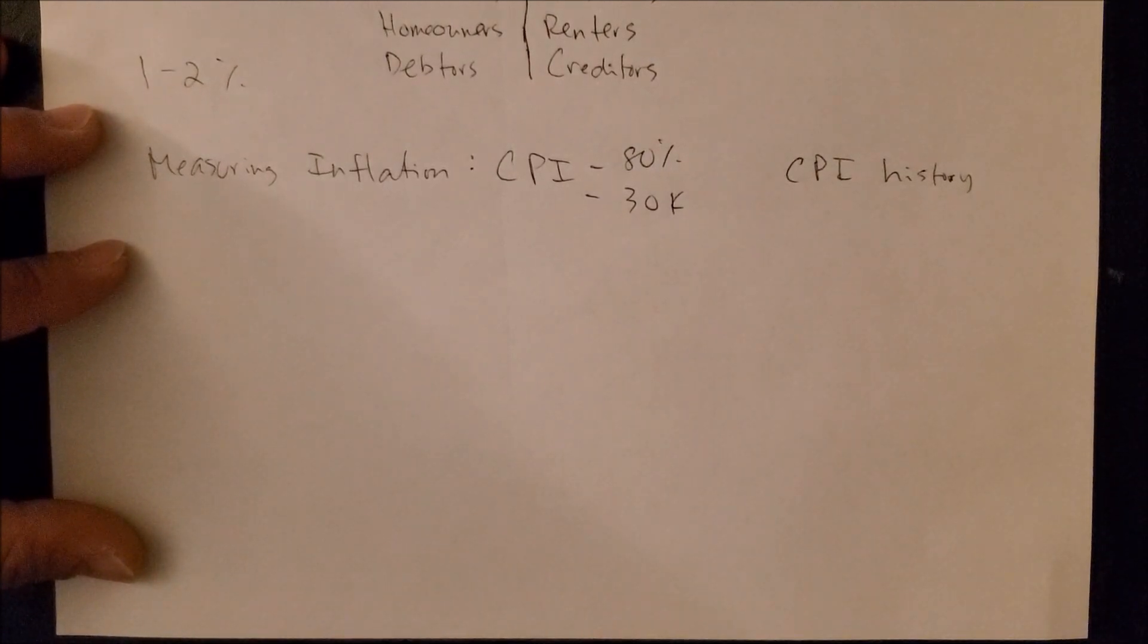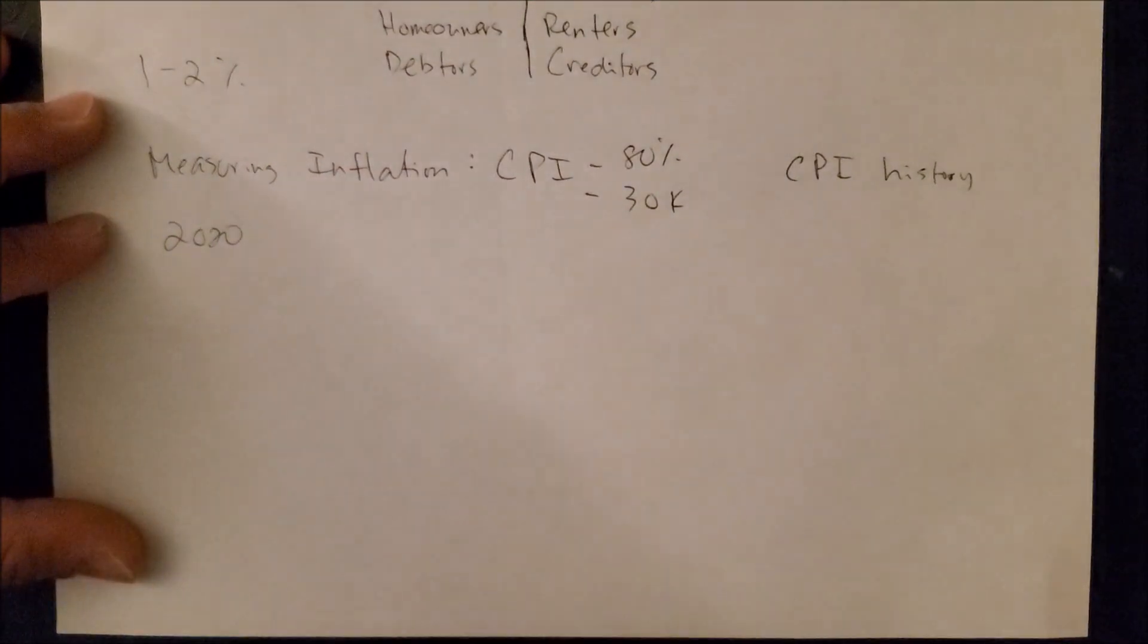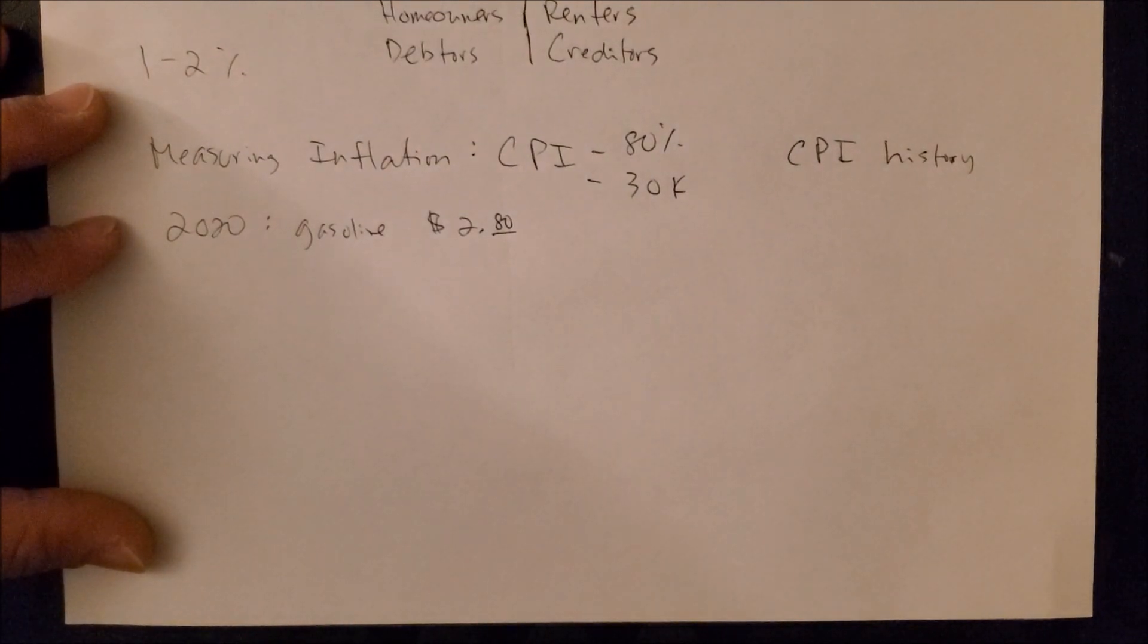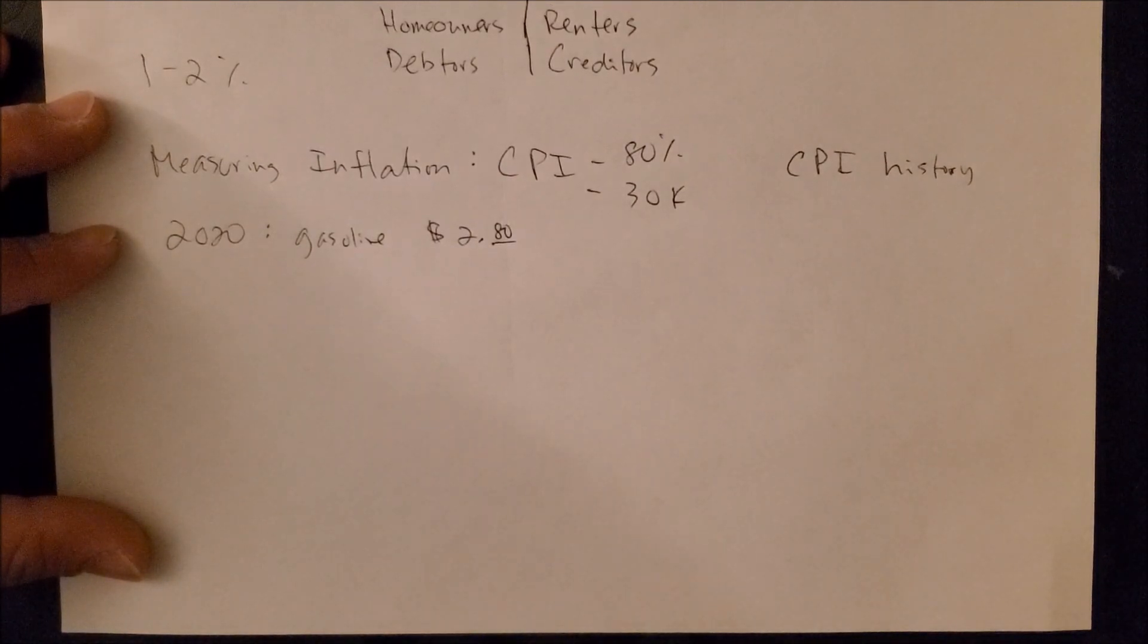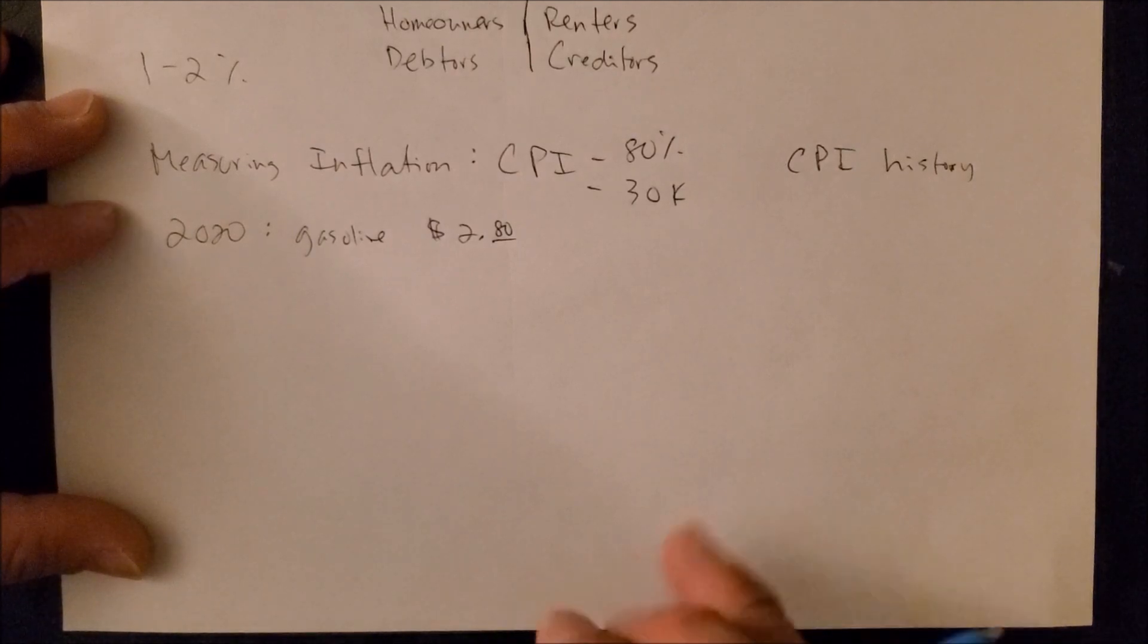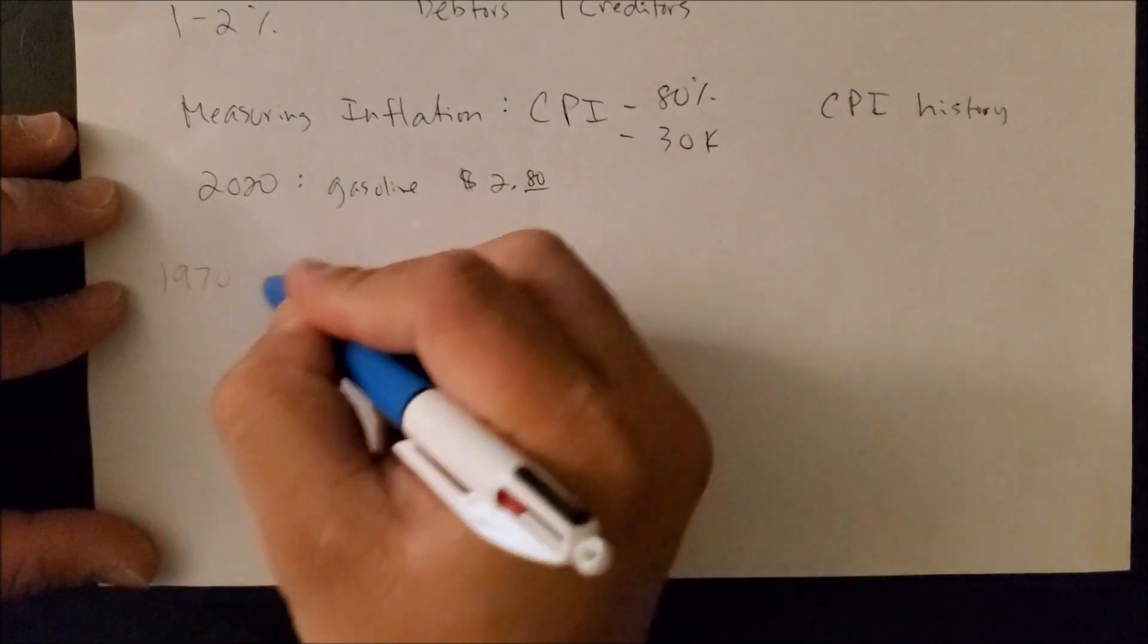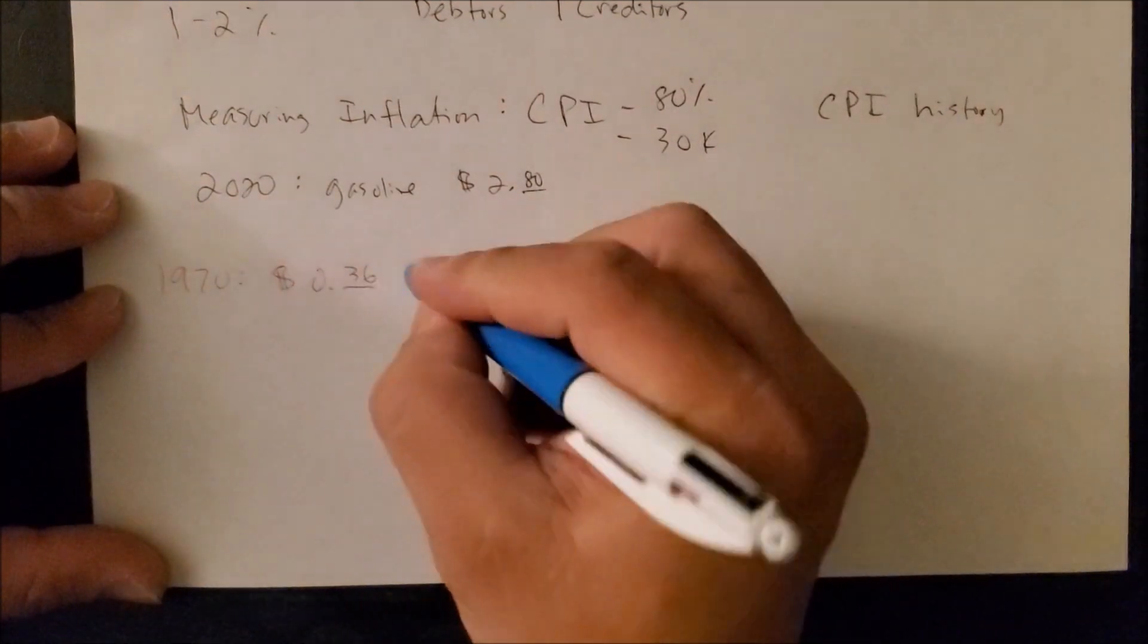We're going to use that index as a way to measure inflation. So, for example, if we know today, 2020, that the price of gasoline is now around $2.80 per gallon, we want to know if we are paying too much, too little, or just about right when gas prices were set in 1970. So what we need to do is we need to know exactly what the price of gasoline was back in 1970. So in 1970, one gallon of gas was approximately 36 cents per gallon.